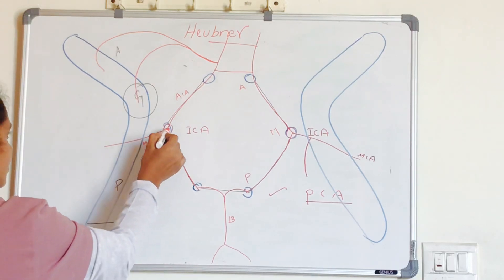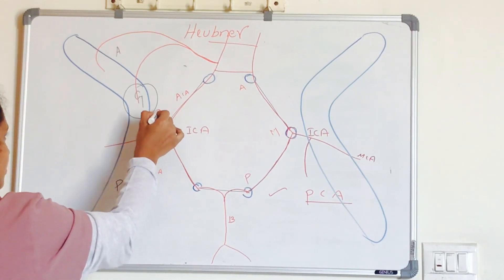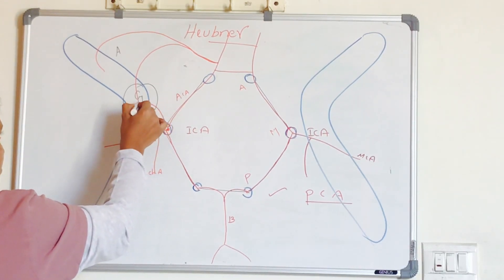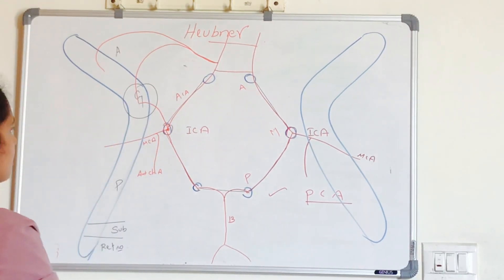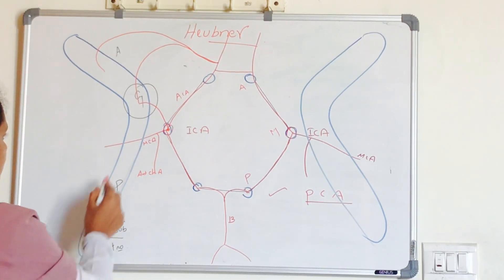The next artery in the Circle of Willis is the internal carotid artery. We have a direct branch from the internal carotid artery supplying the genu.